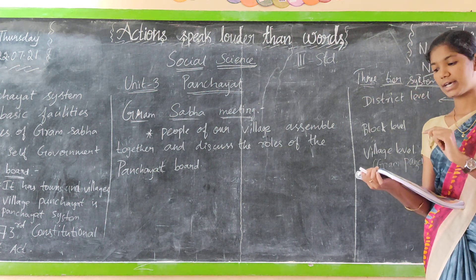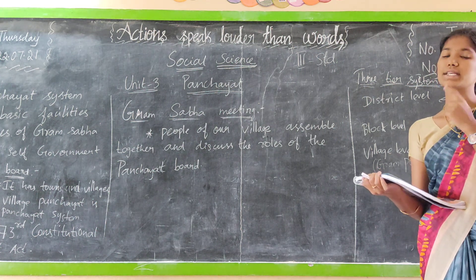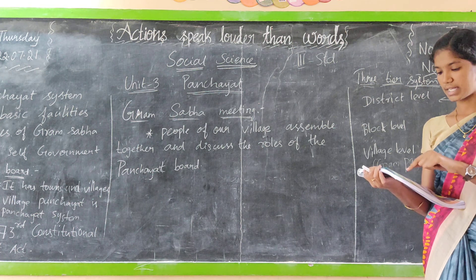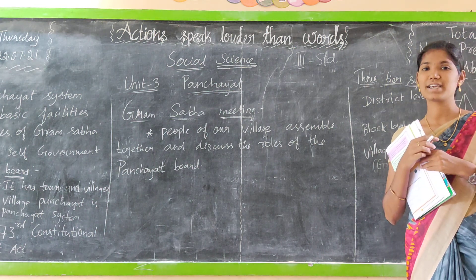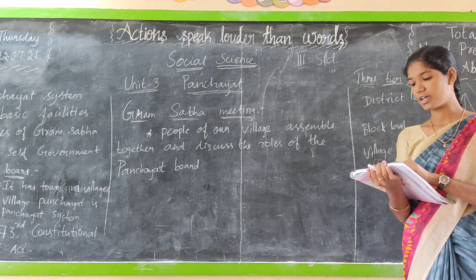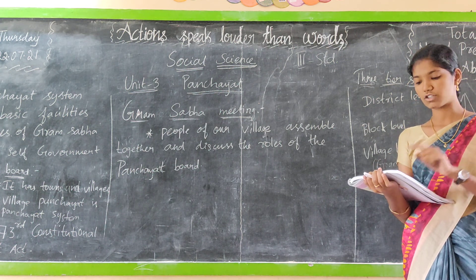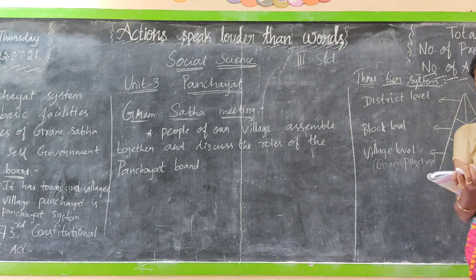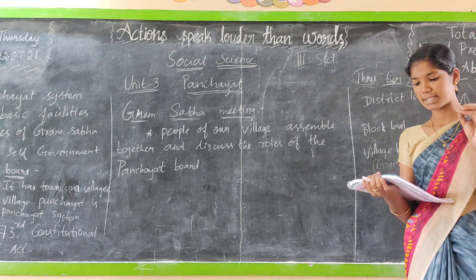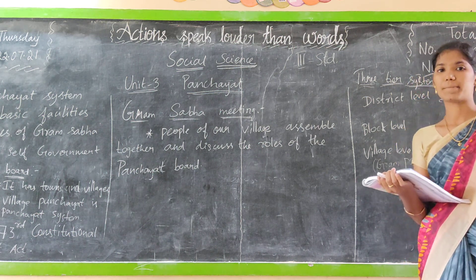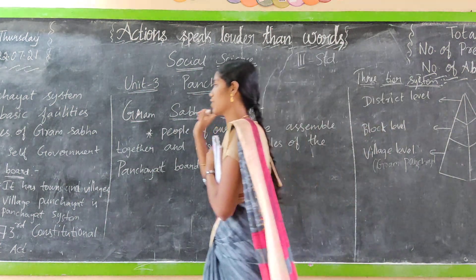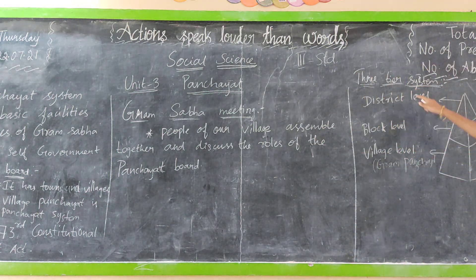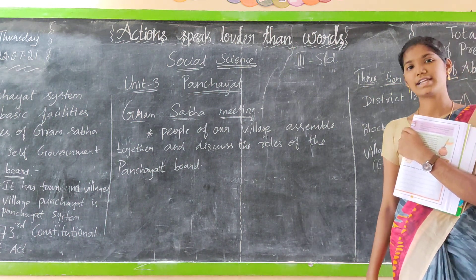Inean is asking how the Panchayat members are selected. Willing people select the president and members through election. The tenure of the members of the Panchayat is five years. The vice president is elected by the ward members. Today we learned what a Gramsabha meeting is, the Panchayat board, and the three-tier system of Panchayat — that is village level, block level, and district level. Thank you.